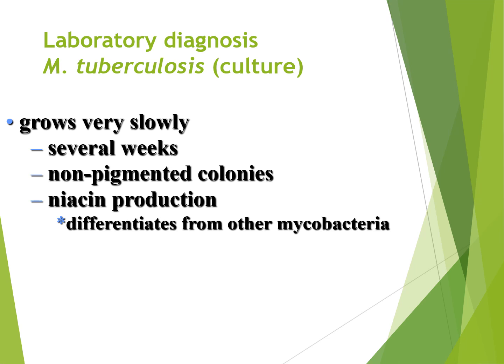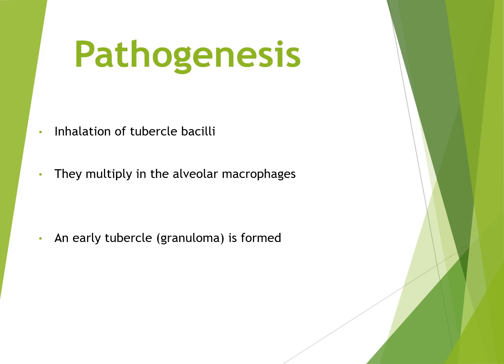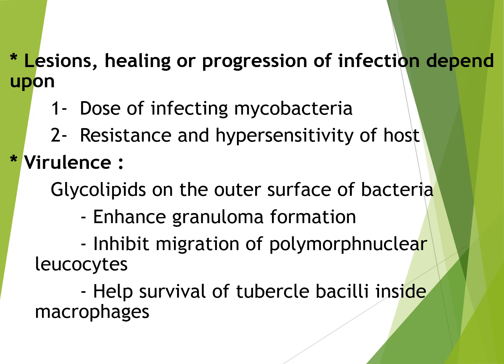This bacterium grows very slowly, takes several weeks, forms non-pigmented colonies, and produces niacin which differentiates it from other mycobacteria. Polymerase chain reaction provides rapid diagnosis for tuberculosis. For pathogenesis, inhalation of the tubercle bacilli causes them to multiply in the alveolar macrophages and an early tuberculogranuloma is formed. Glycolipids on the outer surface of the bacteria enhance granuloma formation, inhibit migration of polymorphonucleocytes, and help survival of tubercle bacilli inside the macrophages.